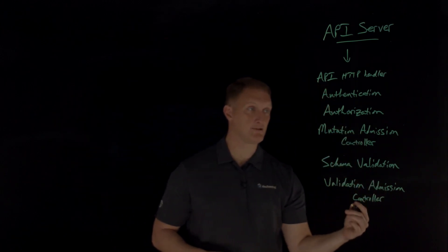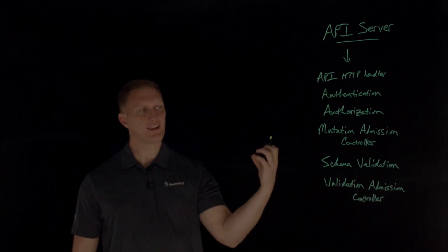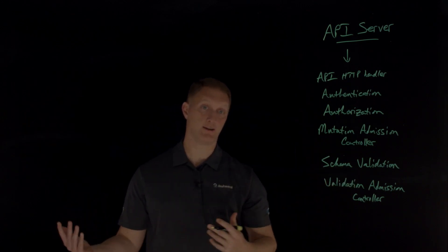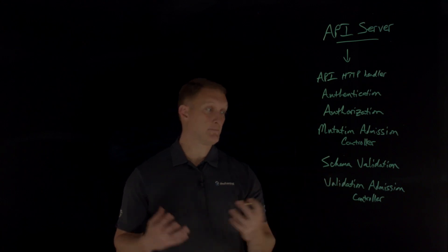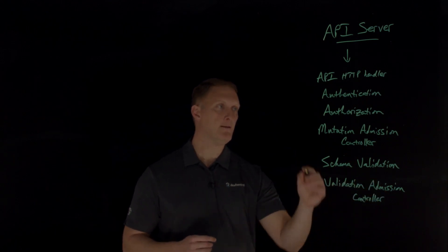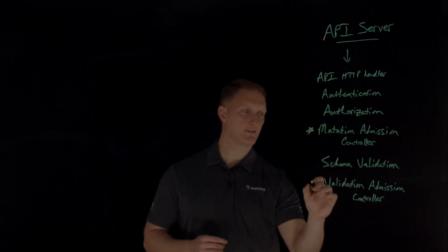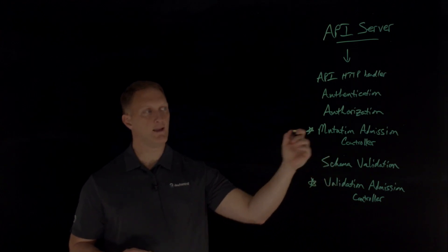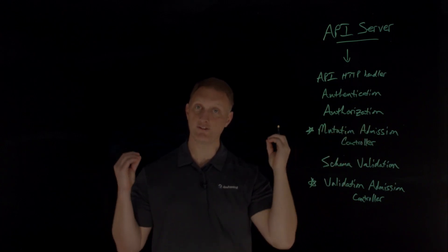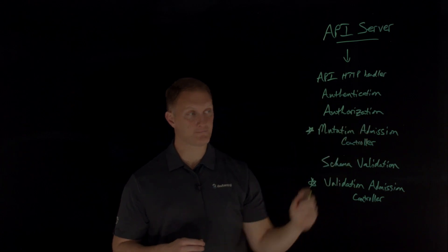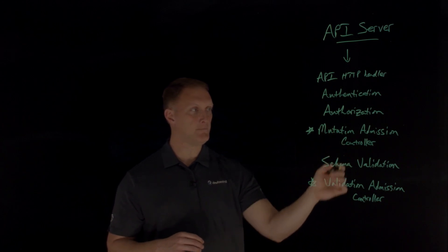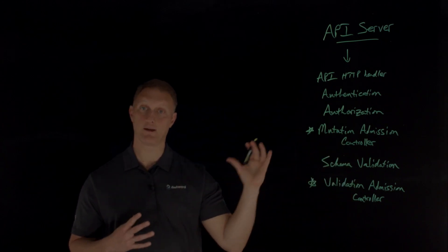The validation admission controller is the gatekeeper. For example, let's say you're trying to deploy a pod in a namespace that doesn't even exist, or you're trying to deploy more resources than you're allowed to — that's where this gatekeeper comes in. And you may ask: could I create my own rules? Could I modify these to fit my own needs? The answer is yes. You don't have to take the out-of-the-box default values. If you have special mutation or validation controls you want to put in place, you can totally do that.